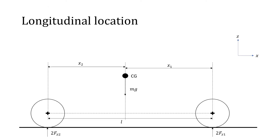This is the same diagram from our first lecture. For anyone new to the channel, I'll define these variables again. We have x1 and x2, which define the location of the center of gravity with respect to the front and rear wheels. mg is the weight of the car acting vertically downward from the center of gravity. l is the wheelbase — the distance between the front and rear wheel center points. 2Fz2 and 2Fz1 are the vertical reaction forces on the front and rear wheels. The coordinate system: left-to-right is x, vertical is z, and perpendicular to the screen is y.